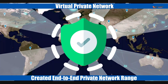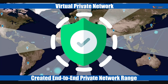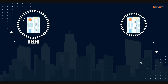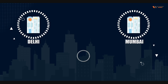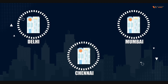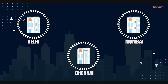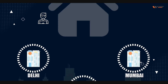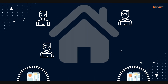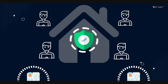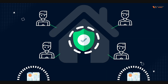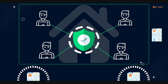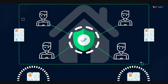Let me give you one example. Suppose you have an office in Delhi, an office in Mumbai, and an office in Chennai. Maybe some of your users are working from home, and they are using VPN for connecting with their office over the internet.